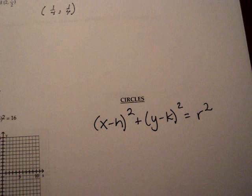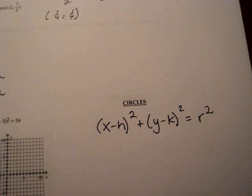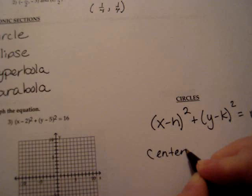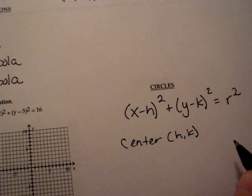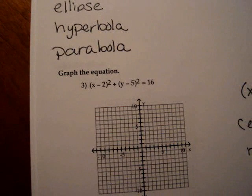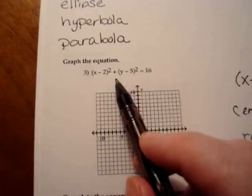The first conic section we're going to discuss is the circle. So here we have, sorry, the standard equation for a circle. x minus h quantity squared plus y minus k quantity squared equals r squared. x and y are our variables and h, k, and r are all special. The first special part is that the center of the circle is located at the point h, k when our equation is in this form and the radius of the circle is equal to r. Now be careful because notice that this is r squared here. So our first job is going to be to graph this circle.